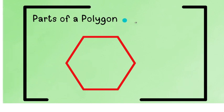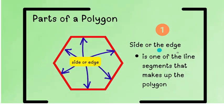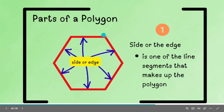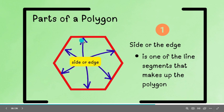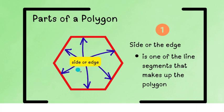All right, so next, we have the different parts. Number one, we have the side or edge. Side or edge is one of the line segments that makes up the polygon. So, this one is a segment. This one is a segment. Or, we can say that they are side or edge. So, this is a part of the polygon.